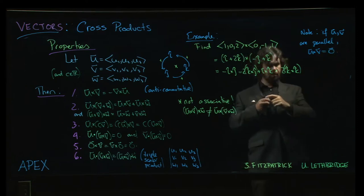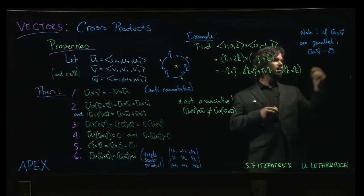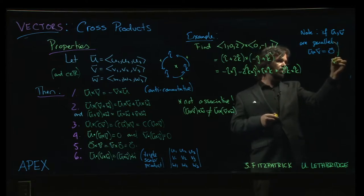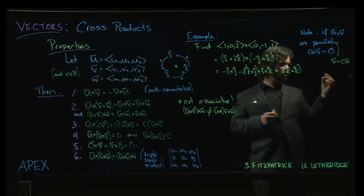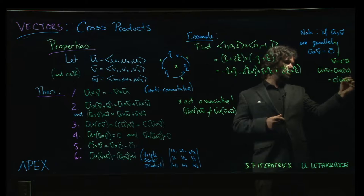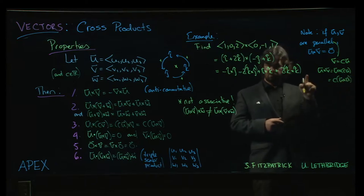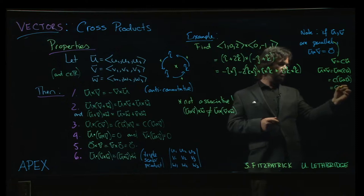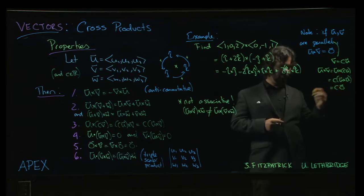And so then u cross v would be u crossed with cu. And you can pull the scalar out. And it's pretty straightforward to check that any vector crossed with itself will give you zero. And scalar times the zero vector is still going to give you the zero vector.